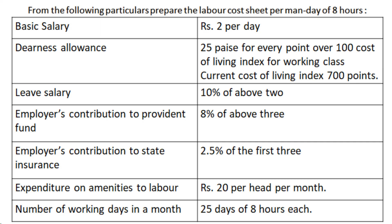DNS allowance is 25 paisa for every point over 100 cost of living index for working class. So after 100 points, for however many points the cost of living index is, for each point he'll be paid 25 paisa. The current cost of living index is 700 points, so we should not consider the first 100 points — with the remaining 600 points he will be paid 25 paisa.